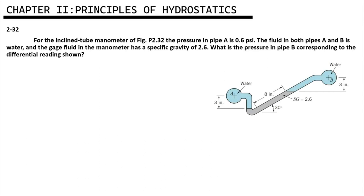Here is our figure. Before we solve this problem, we must identify the given values. Pressure at point A is equal to 0.6 psi, and we converted it into pounds per square inch. The specific gravity is equal to 2.6.